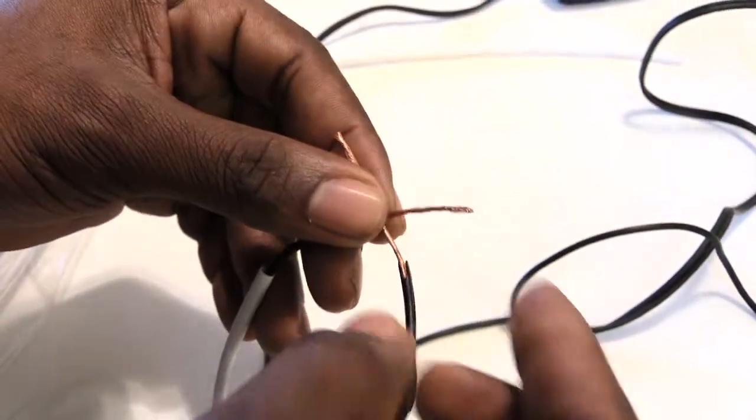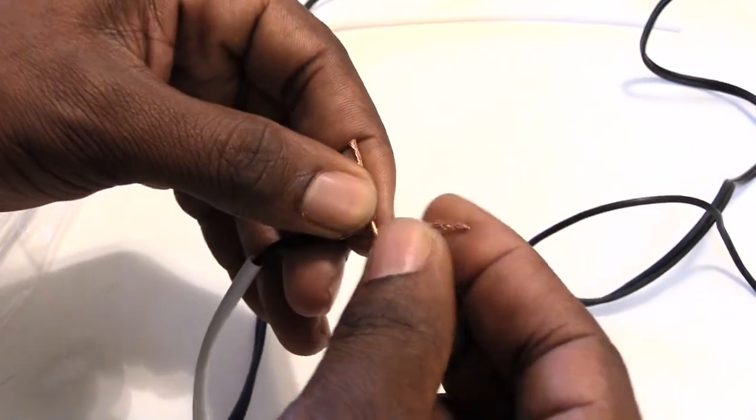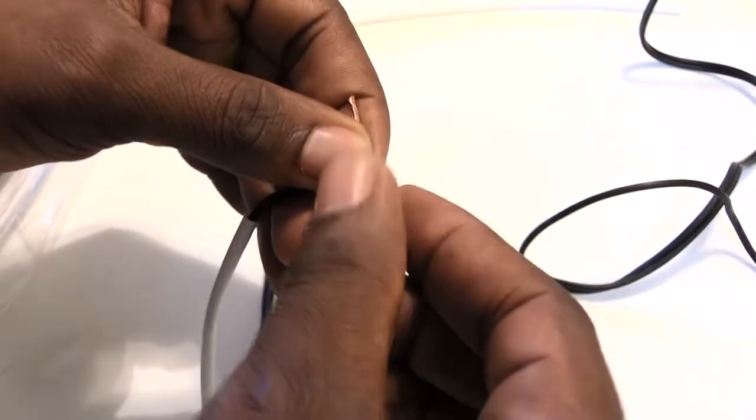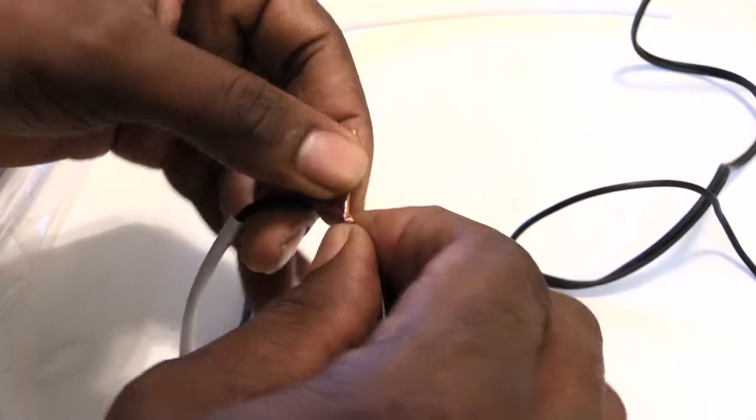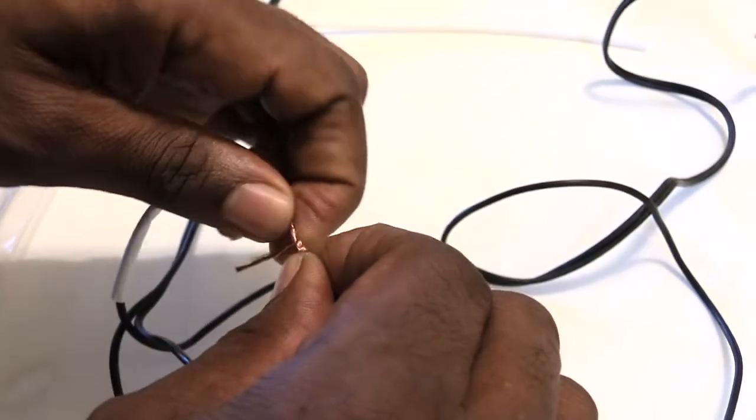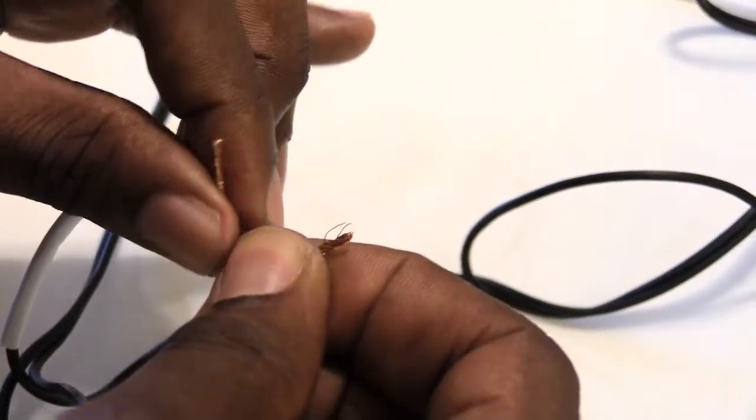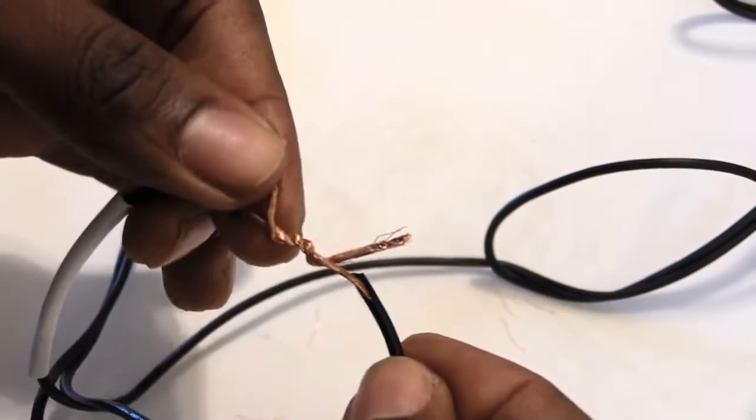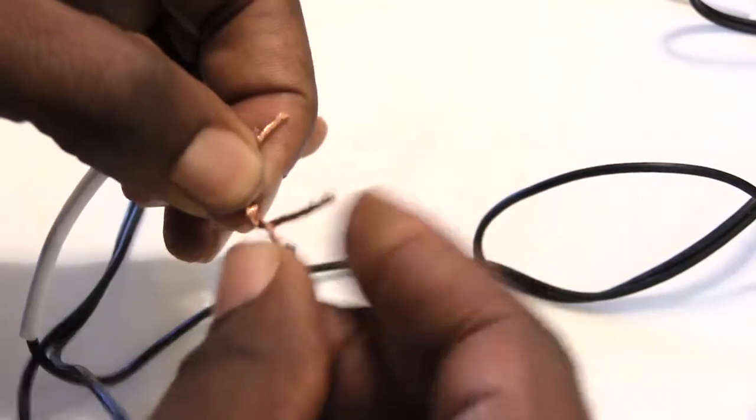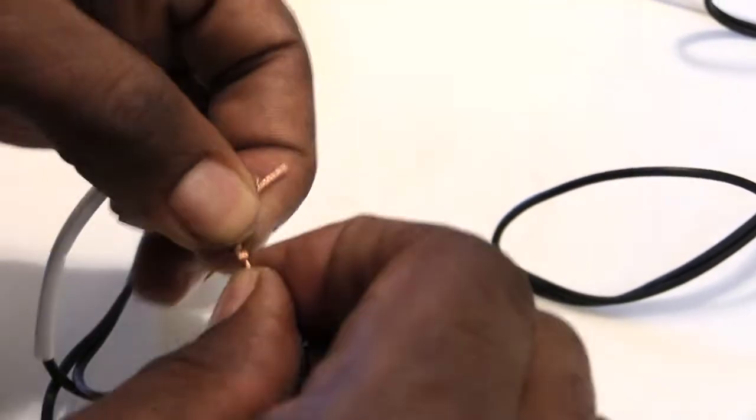Take one side and fold it down like that. Take the other side and fold it down like that. Then you want to basically just keep wrapping each side all the way around. I'm making it tight, wrapping each side.